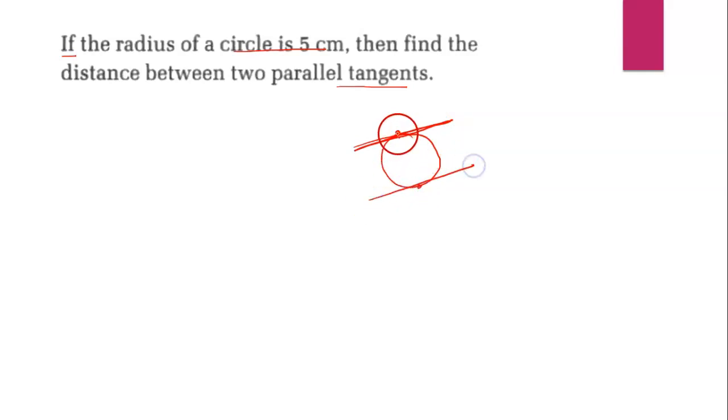So this is the diameter of the circle. If parallel tangents are drawn, then the distance between two parallel tangents is equal to diameter.